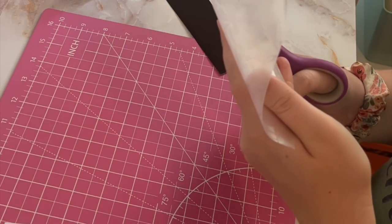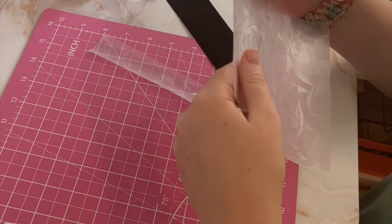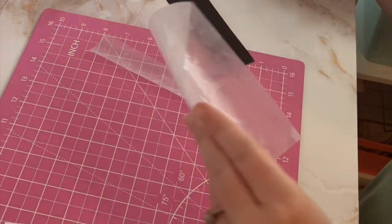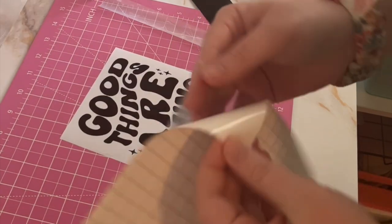And instead of removing the backing of the window cling now, I'm just cutting around it because I wasn't ready to go put this on my window right away.